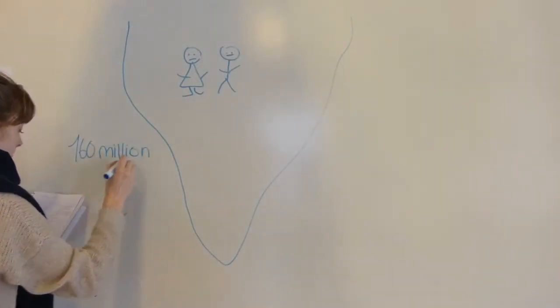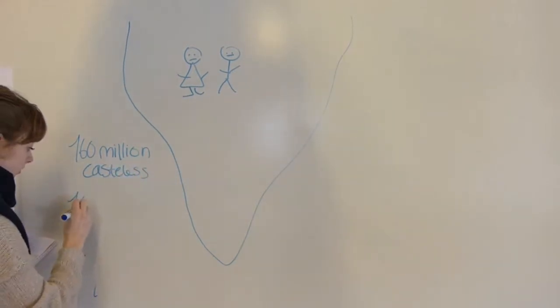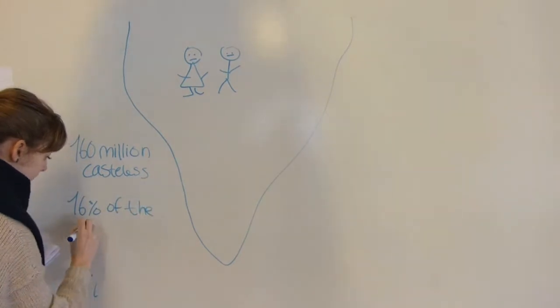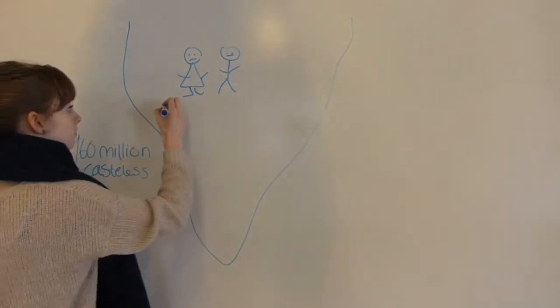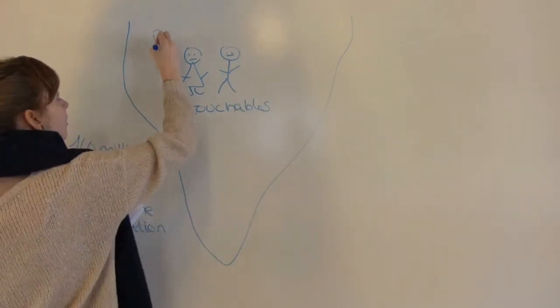Out of the one billion people living in India, there are about 160 million caseless. That is about 16% of the population. They are called many things including Dalits, caseless, and impure.